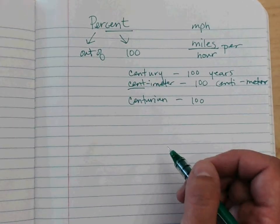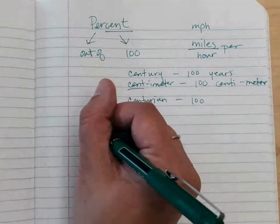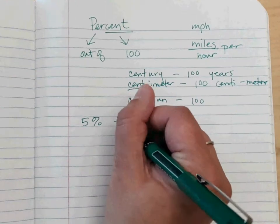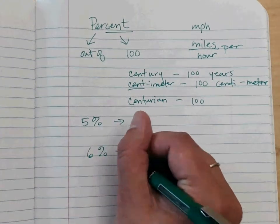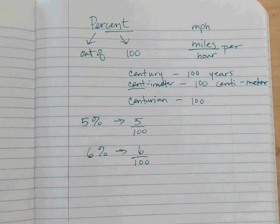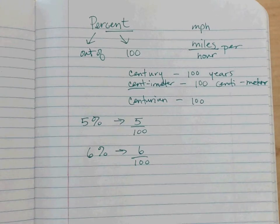A percent is a fraction out of a hundred. Five percent is the same as five out of a hundred. That makes it easy to compare to six percent — six out of a hundred — because all percents share a common denominator of 100. That's why we can add and subtract percents so easily, and why percents give us a common scale for comparing things.